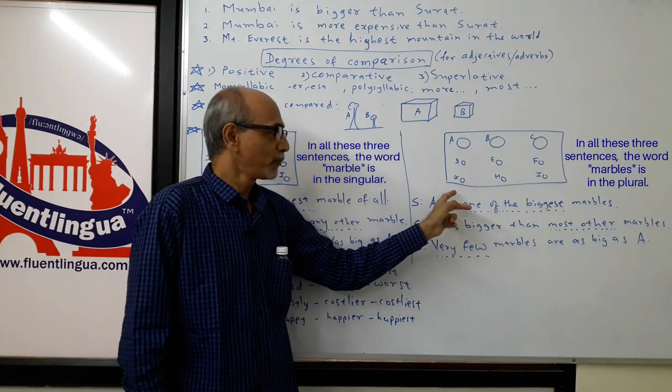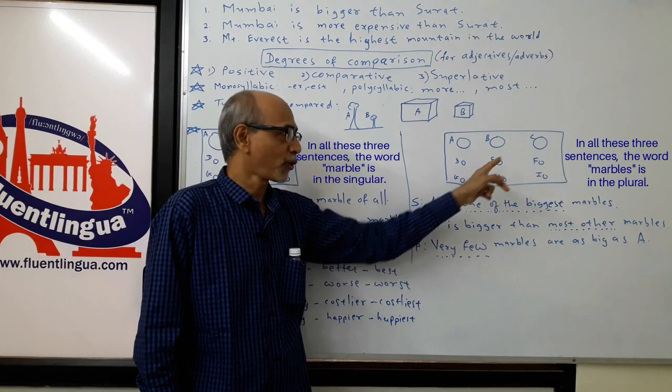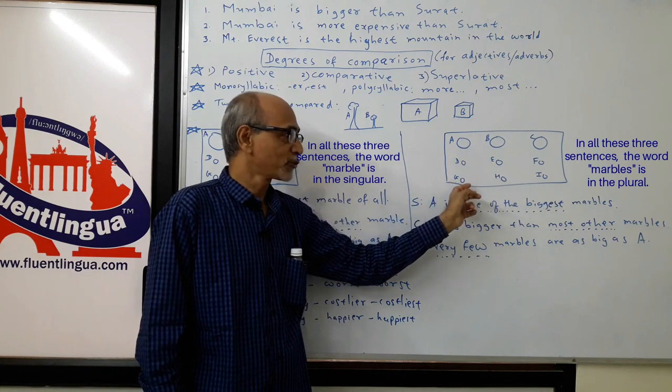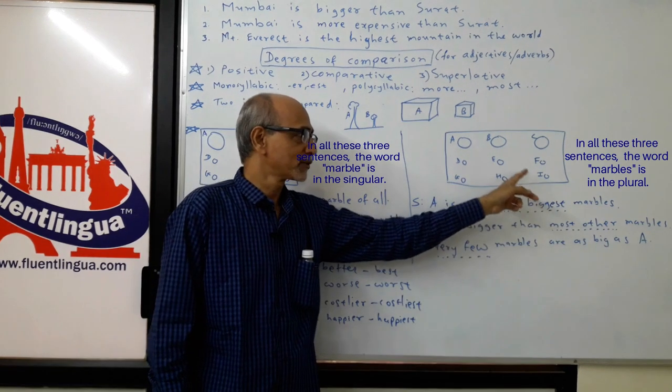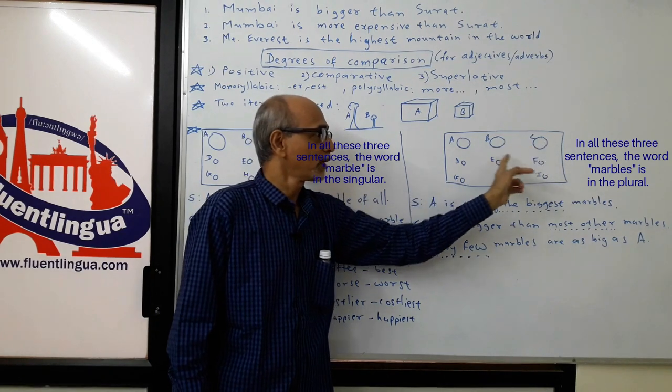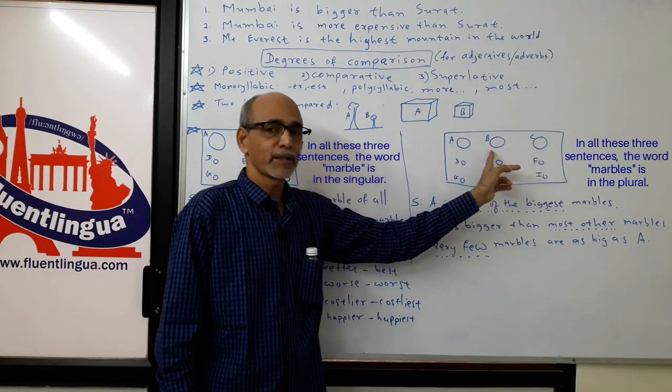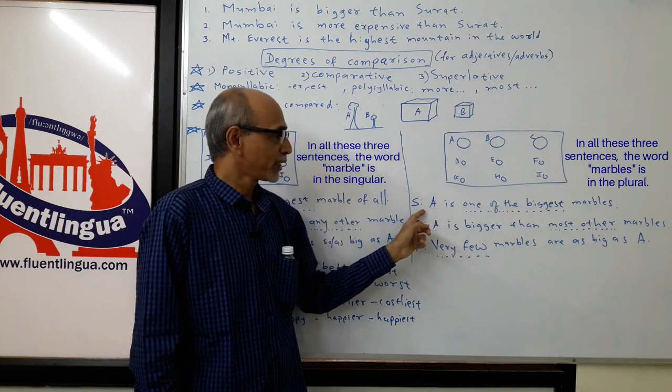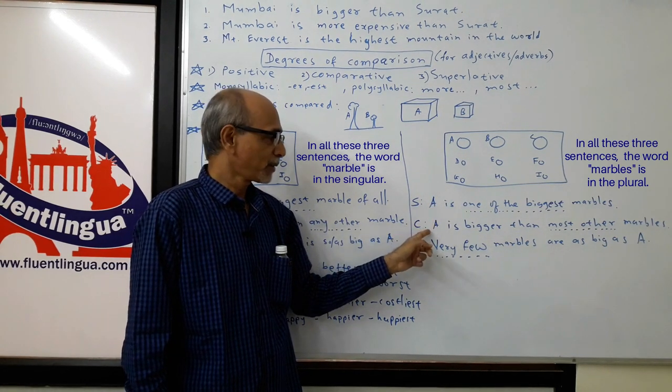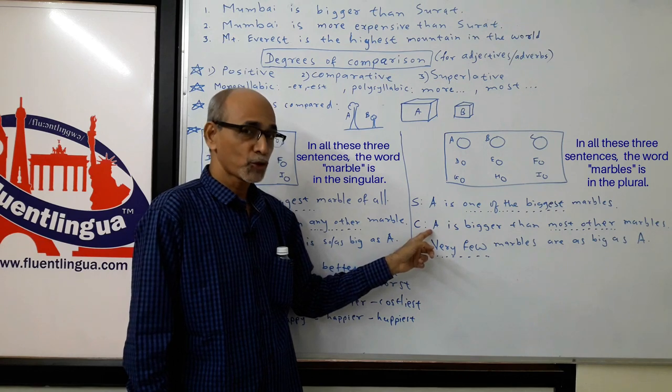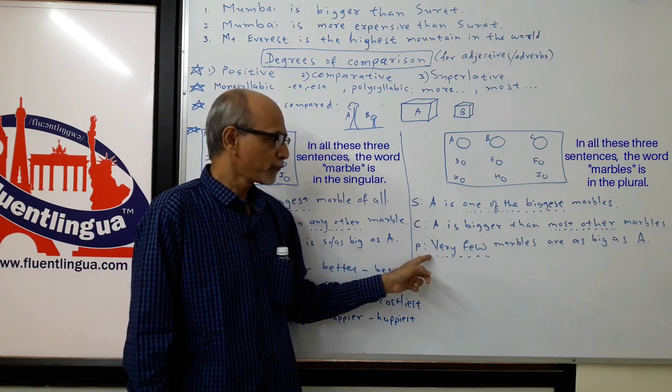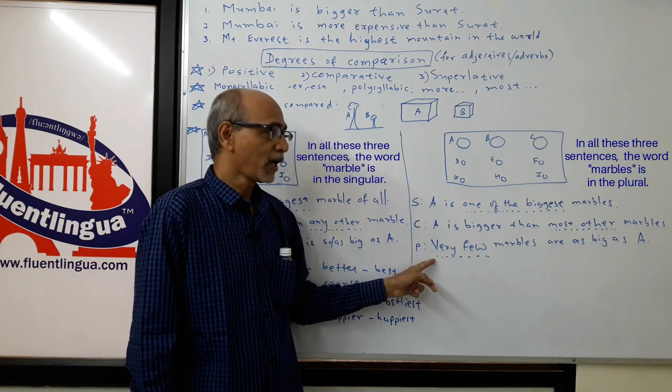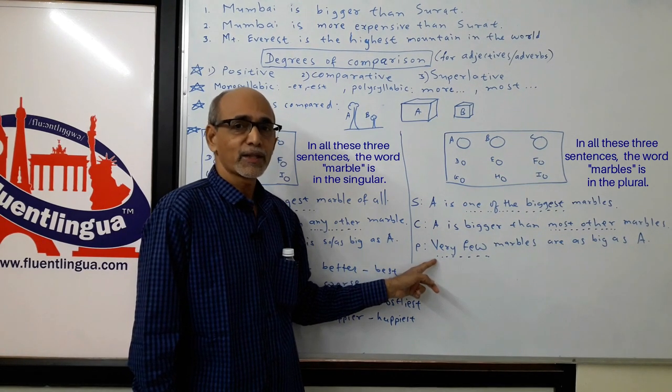In positive, we can't say no other marble is as big as A, because it will be wrong for B and C. B and C are equal to A. So in that case you have to say very few marbles are as big as A. Superlative: A is one of the biggest marbles. Comparative: A is bigger than most of the marbles. And actually here we can see only two marbles. Very few marbles are as big as A.